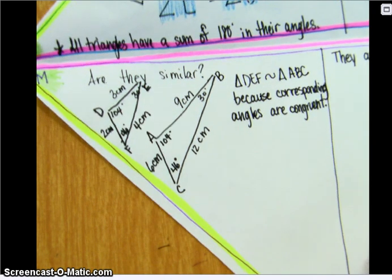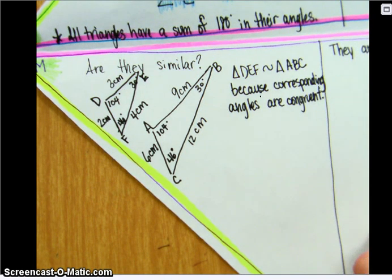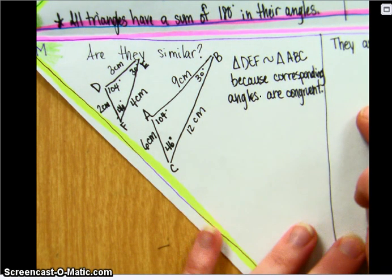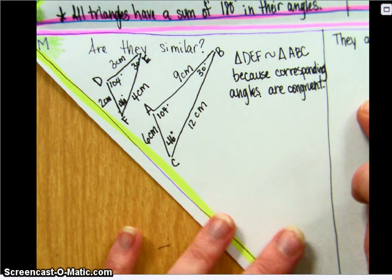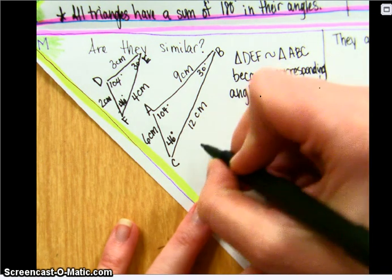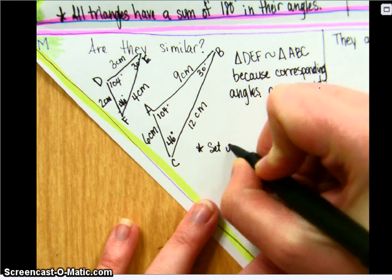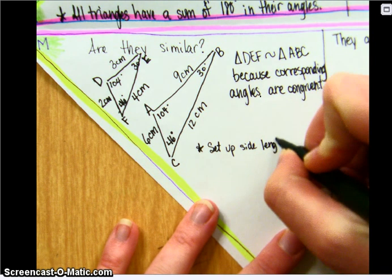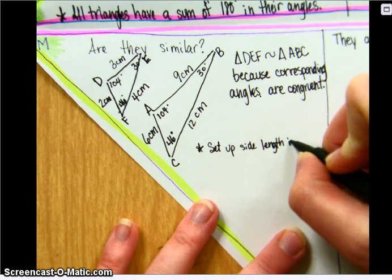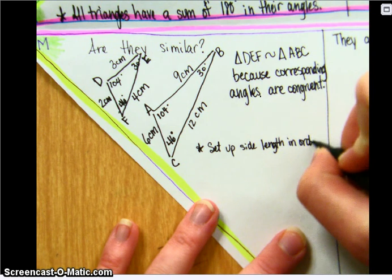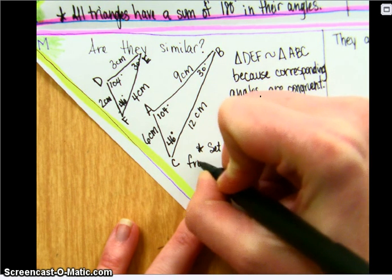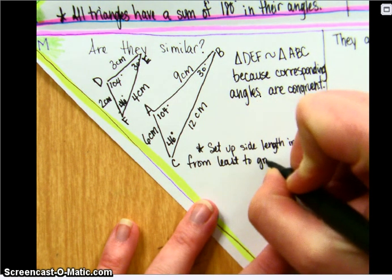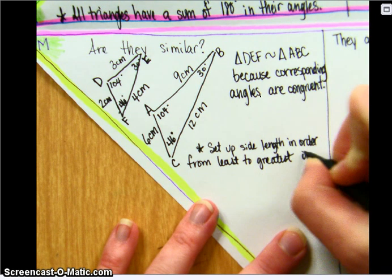That is one way you can determine that they are similar. However, you could also determine that they are similar by examining the lengths of their sides, their corresponding sides. So if we set up the side lengths in order from least to greatest in ratios.